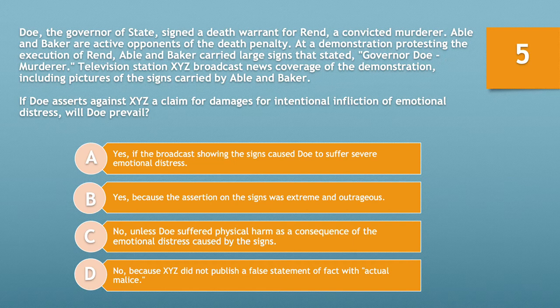A, yes, if the broadcast showing the signs caused Doe to suffer severe emotional distress. B, yes, because the assertion on the signs was extreme and outrageous. C, no, unless Doe suffered physical harm as a consequence of the emotional distress caused by the signs. And D, no, because XYZ did not publish a false statement of fact with actual malice. Take ten seconds and choose the best answer now.